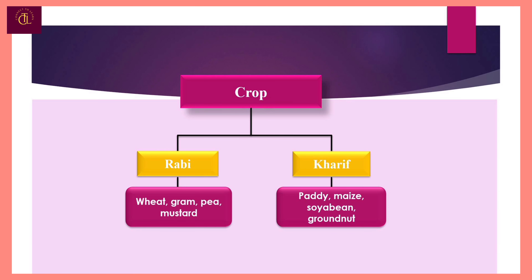Crops are of different types like cereals, vegetables, and fruits. These can be classified on the basis of the season in which they grow. As we know, India is a vast country and the climatic conditions like temperature, humidity, and rainfall vary from one region to another. Accordingly, there is a rich variety of crops grown in different parts of the country.